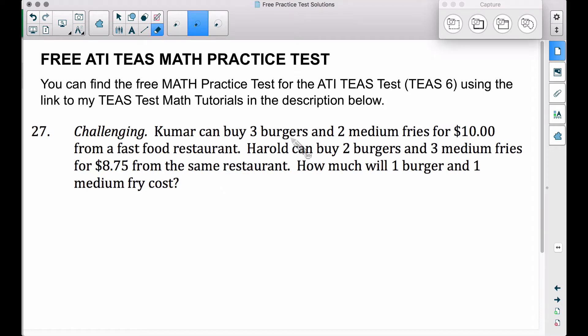Kumar can buy three burgers and two medium fries for $10 from a fast food restaurant. Harold can buy two burgers and three medium fries for $8.75 from the same restaurant. How much will one burger and one medium fry cost? So we have two unknowns here. I'm going to let B, the variable B, represent the cost of a hamburger and f is going to be the cost of a medium fry.